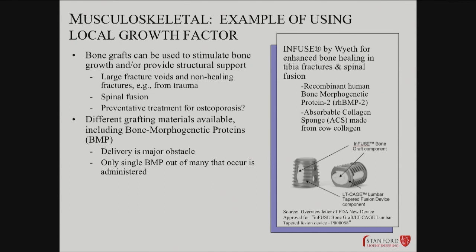There are people using growth factors trying to design interventions. If you know a protein is involved, maybe you can deliver it. People are working on ways of delivering, for example, bone morphogenetic proteins to increase strength. There's an interesting device made by Wyeth: an absorbable collagen sponge derived from bovine collagen, used with recombinant human BMP2. This has been used and is being explored for use in big fracture voids — where there's such a big fracture you can't just join the two pieces of bone together smoothly — and possibly as a preventative treatment for osteoporosis. It's a nice molecular-device combination approach.